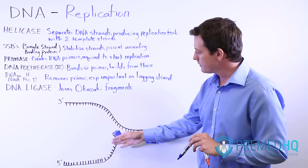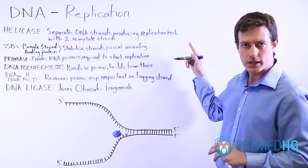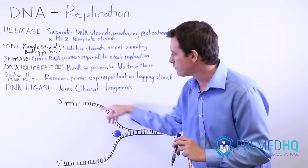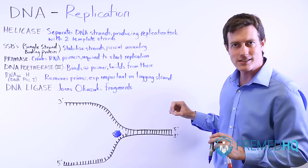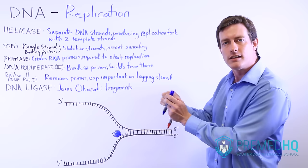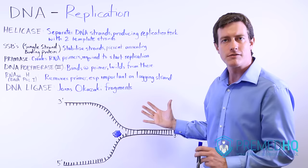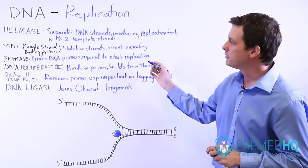When helicase comes in, it separates the two strands, and this forms what is called a replication fork. The replication fork is fork-shaped, and replication is now allowed to proceed on these strands because we have separated them and thus allowed other enzymes to have access. Helicase essentially takes the helix and breaks it into its two constituent components, which then serve as the template strands for the rest of the replication process.